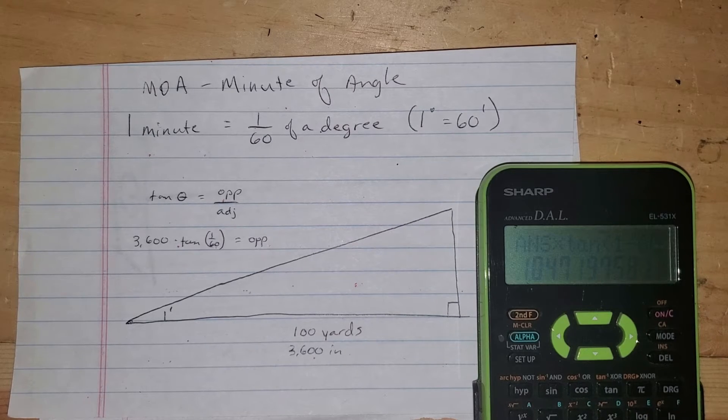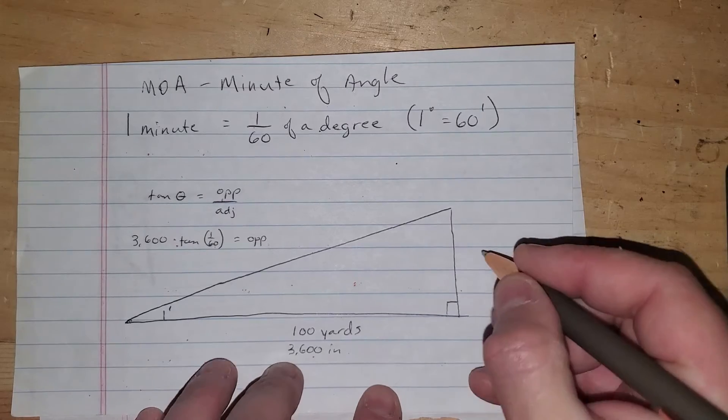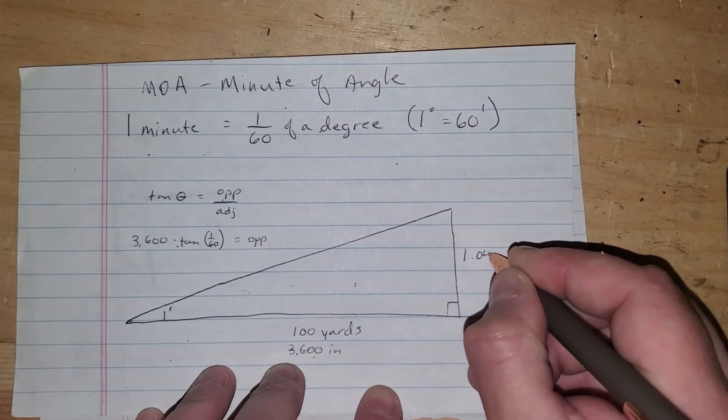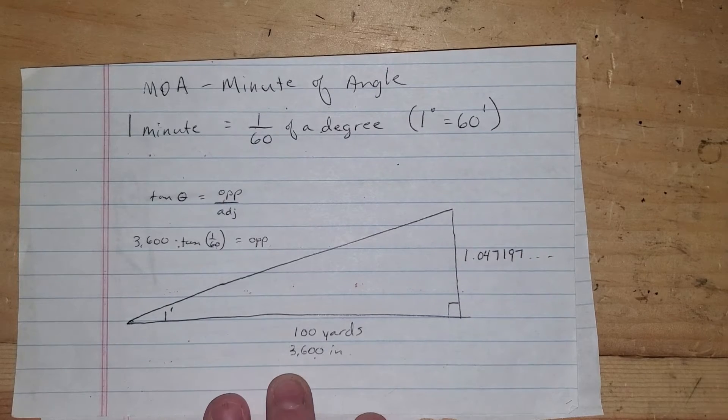And what do I get? I get 1.04719, all that stuff. So I'm going to write that down. 1.047197 dot, dot, dot.